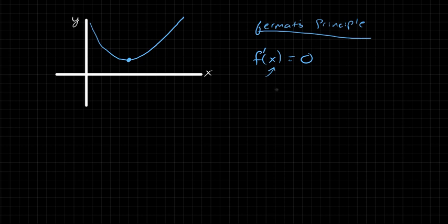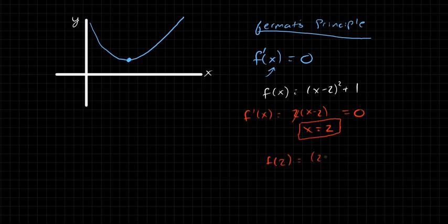Just a quick example. If we have the function f of x equals (x minus 2) squared plus 1, and we want to find the minimum of it, the way we do that is we take f prime of x, which is 2(x minus 2), and then we set that equal to 0. So solving for x, we can cancel out the 2, and we find that x equals 2. So we know we have a minimum or a maximum at x equals 2. And the way we find out what that minimum or maximum is, then we plug it back into f of x. So f of 2 equals (2 minus 2) squared plus 1, or f of 2 equals 1.